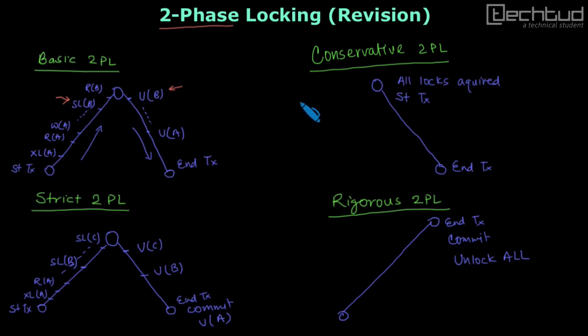If a transaction is going to use A, B, C variables, then first transaction asks for lock on all the data. Once the lock is granted, then transaction starts. That is why it does not have any growing phase. Simply it gets all locks and then it starts the transaction. It has shrinking phase but it does not have any growing phase.